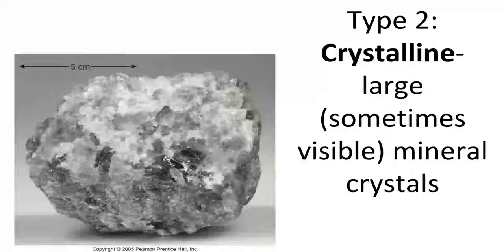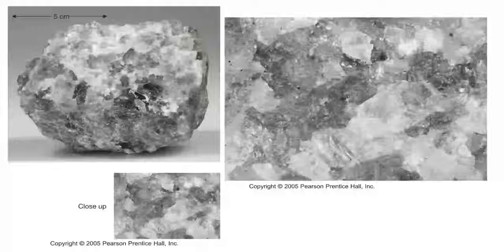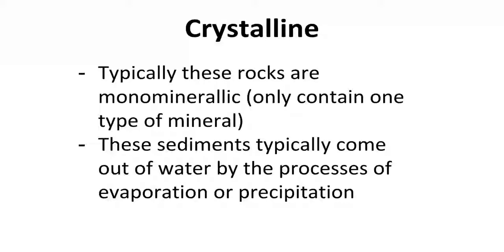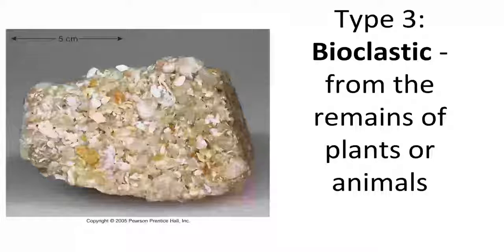The second type is crystalline sediments — basically just crystals of various sizes grown together. You should recognize the rock in this picture. Crystalline sedimentary rocks are typically monomineralic, meaning they have just one mineral throughout, as opposed to clastic varieties which have many different minerals. As we'll see in video two, these are formed by the processes of evaporation and precipitation — crystals pop out of water to form these sedimentary rocks.